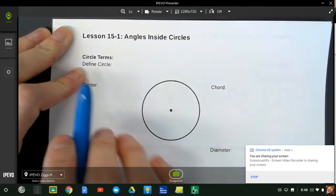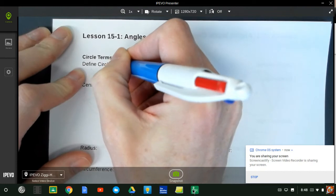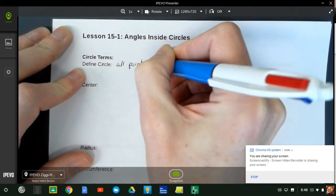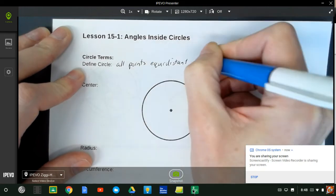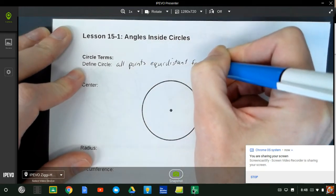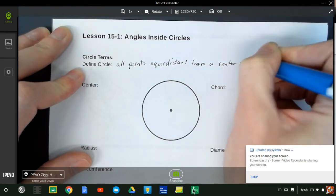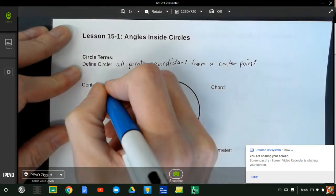A lot of these we've already done. Defining a circle, for example, we said a circle is all points equidistant from a center point. And that center point is a fixed point in a circle.